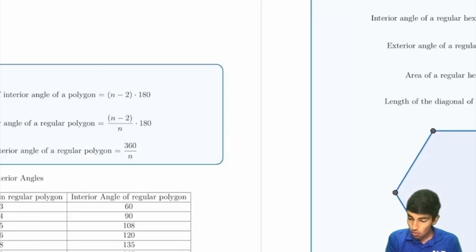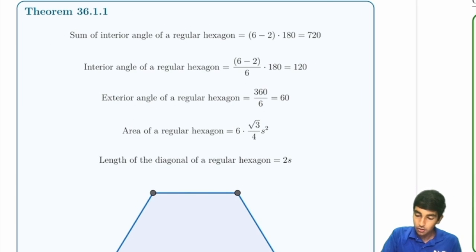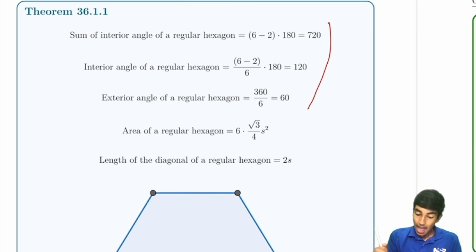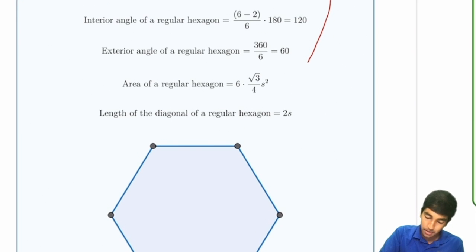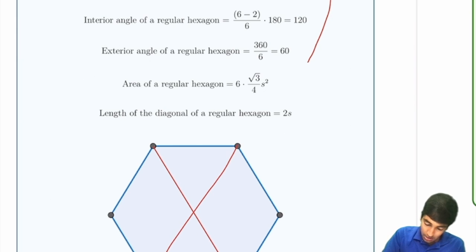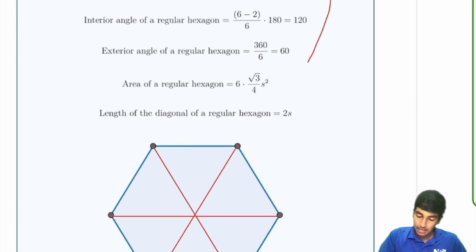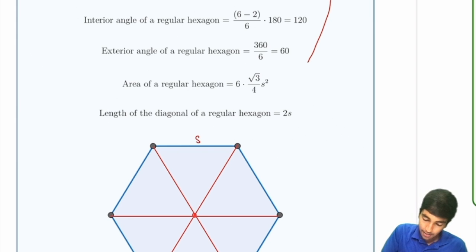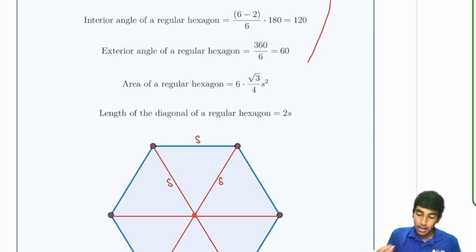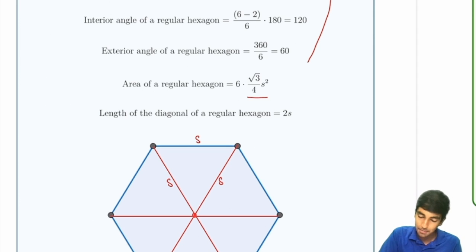Now we'll move on to hexagons. These are some angle-chasing results derived from our previous identities. A very cool property about hexagons is that we can divide it into six equilateral triangles — this is a very common technique in these types of problems. These all have a side length of s. The area of an equilateral triangle is (√3/4)s², and of course there are six of them, so times 6.